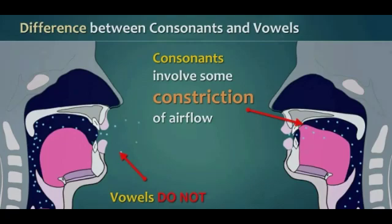Consonants involve some constriction of airflow. Constriction means the gap or the distance between two articulators while producing a sound. Constriction also stands for obstruction that is caused to the airflow somewhere in the vocal tract.